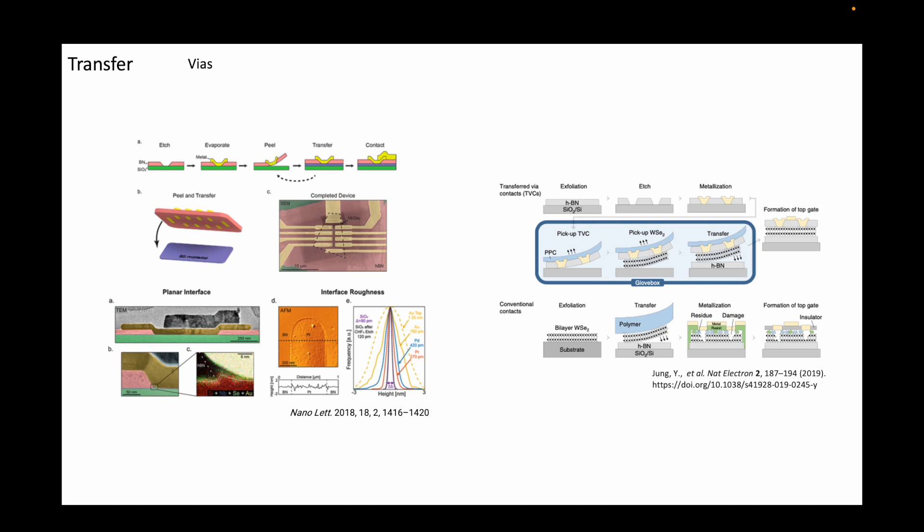The last method I want to discuss is the VIA method. Similar to the VIAs in PCBs, where holes are drilled to connect the copper lines of different layers together, the Van der Waals VIAs connect the encapsulated 2D materials with the external world. In this method, the topmost HBN is pre-patterned by etching and evaporating the contacts.